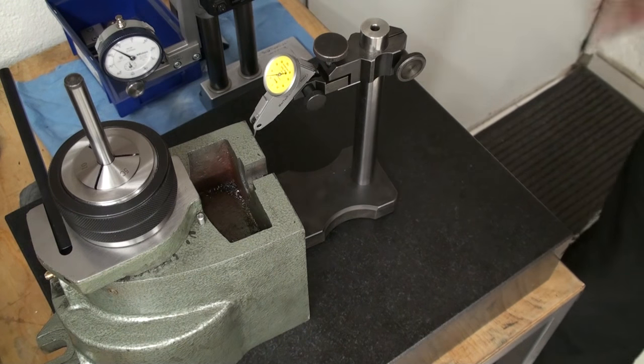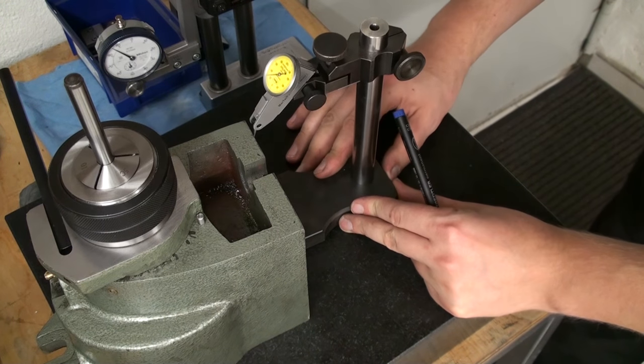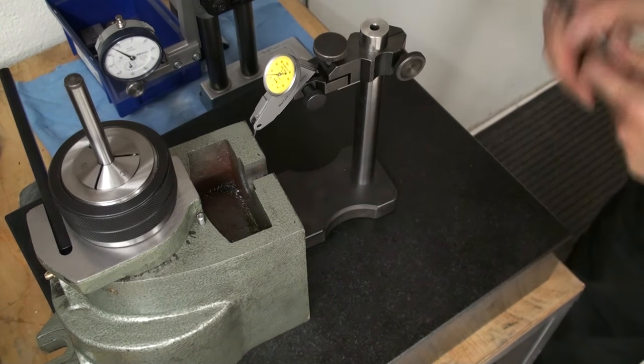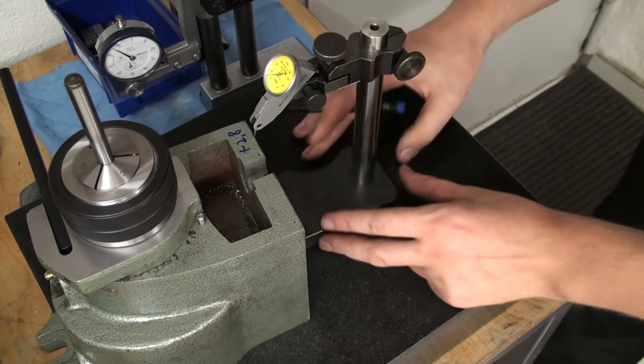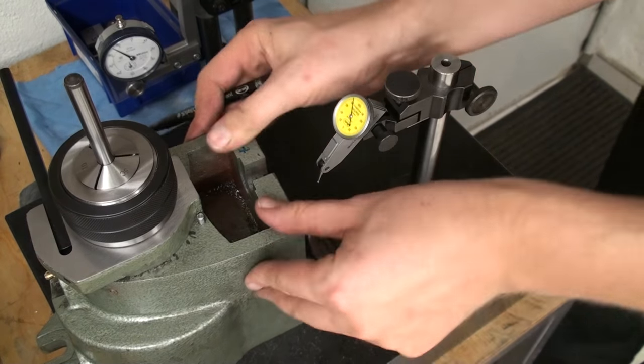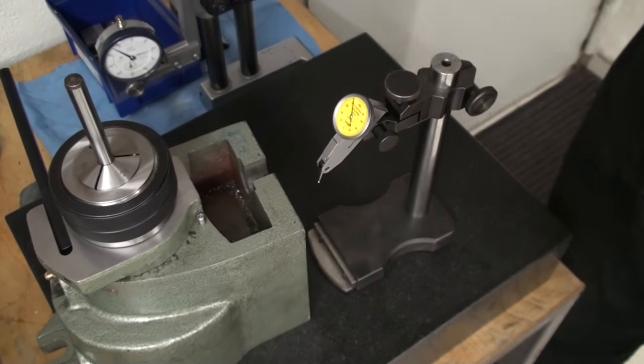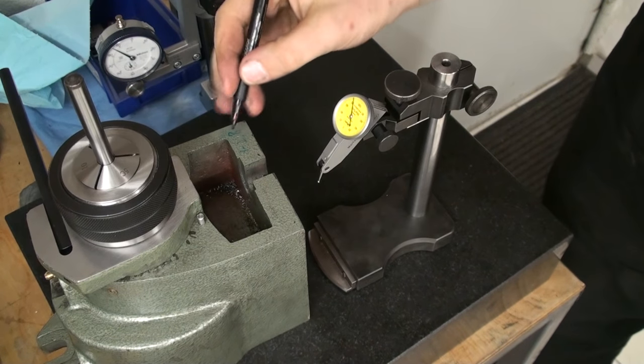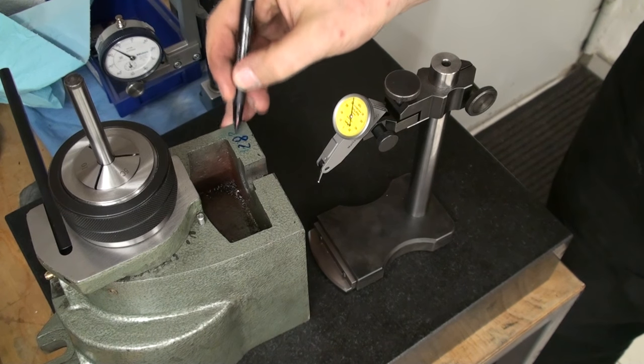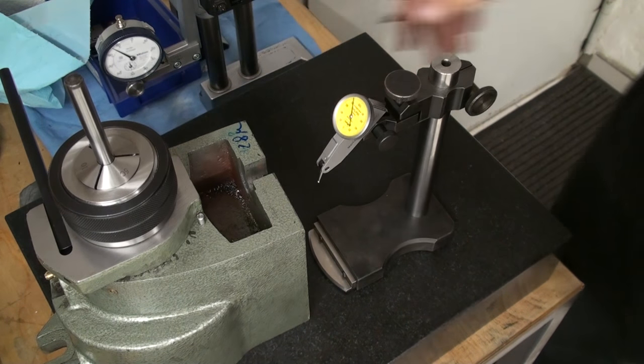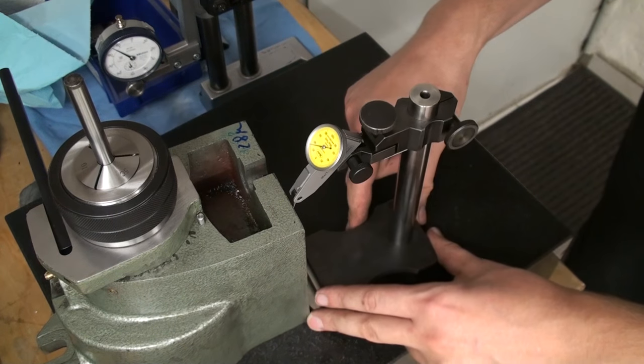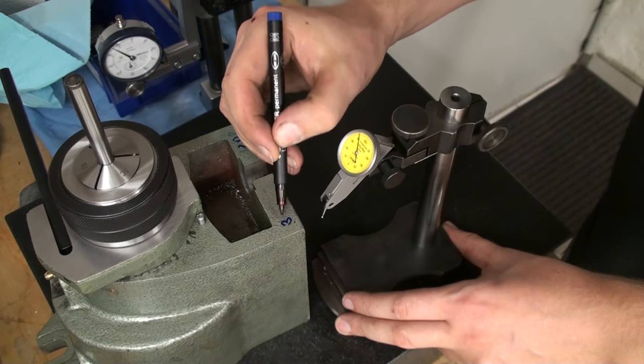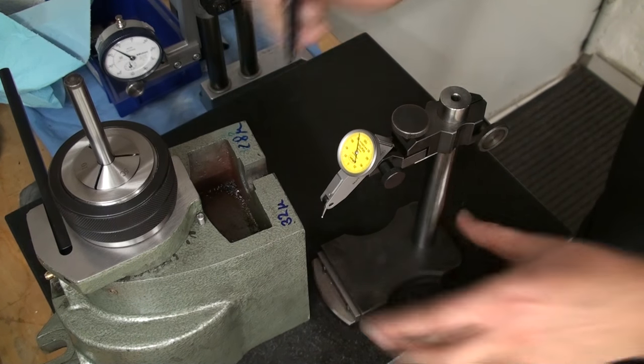Okay, over here we have plus 2.8 hundredths of a millimeter. Let's do it the neat way. 28 thousandths of a millimeter, or as some people like to call it, microns. 0.0011 inch. That's also not terribly good, but also not terribly bad.